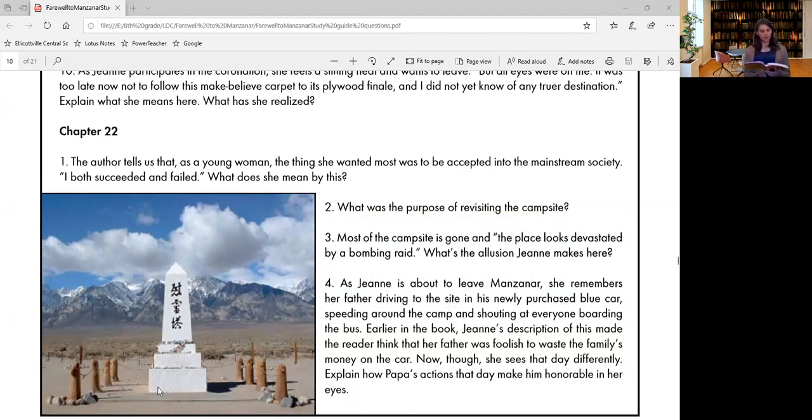We turned the kids loose, watched them scamper off ahead of us, and we followed what used to be an asphalt road running from the backside of the camp, a mile out to the highway. The obelisk, built in 1943, and the gatehouses are all that have survived intact from internment days. The rest of the place looks devastated by a bombing raid. The old road was disintegrating. Split, weed sprung.